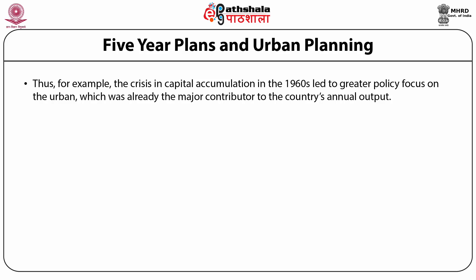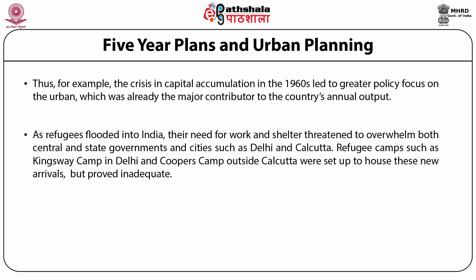The period of the first and second five-year plans, that is from 1951 to 1961, was marked by the partition which, in the words of Sanyal, was one of the largest mass displacements of people in contemporary history. As refugees flooded into India from both east and west Pakistan, there was a dire need for work and shelter. Their needs threatened to overwhelm both central and state governments and cities such as Delhi and Calcutta. Refugee camps such as Kingsway Camp in Delhi and Cooper's Camp outside Calcutta were set up but proved inadequate, and large numbers had to resort to squatting.